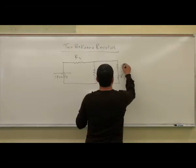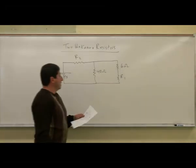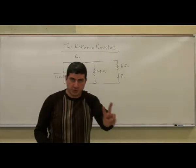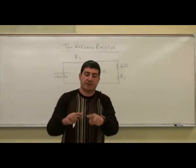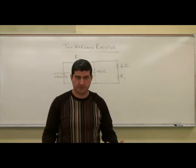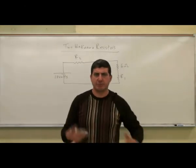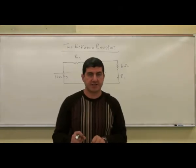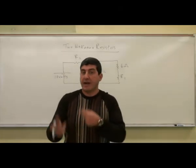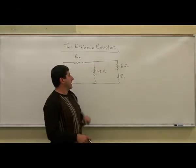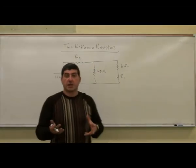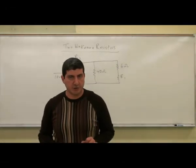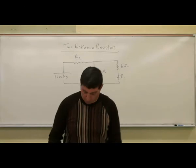We have two unknown resistors and a six-ohm resistor. There are two stipulations — two conditions that you have to meet. Whoever makes this kind of problem has to do it in advance, possibly working backwards: they pick certain numbers, solve the problem, then determine which unknowns to use and which two stipulations to give.